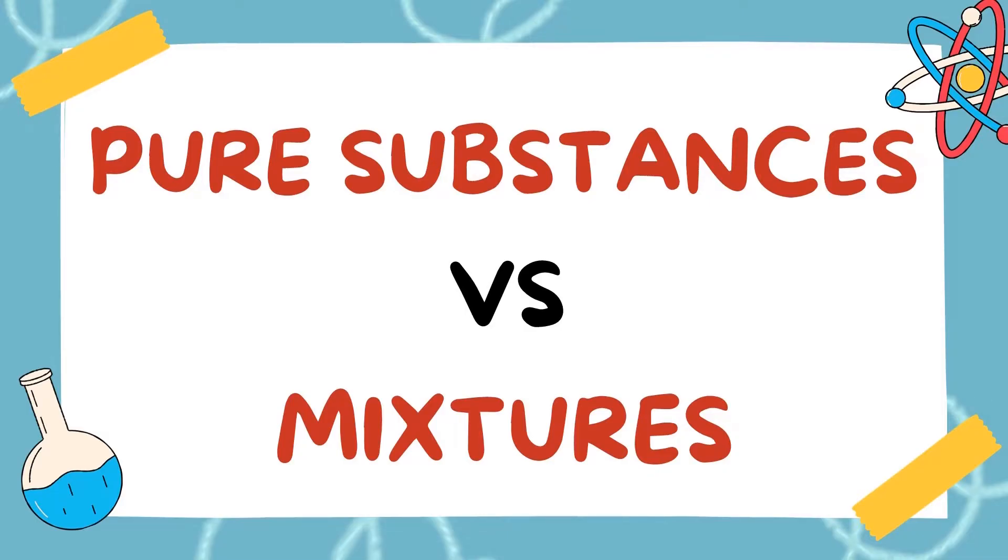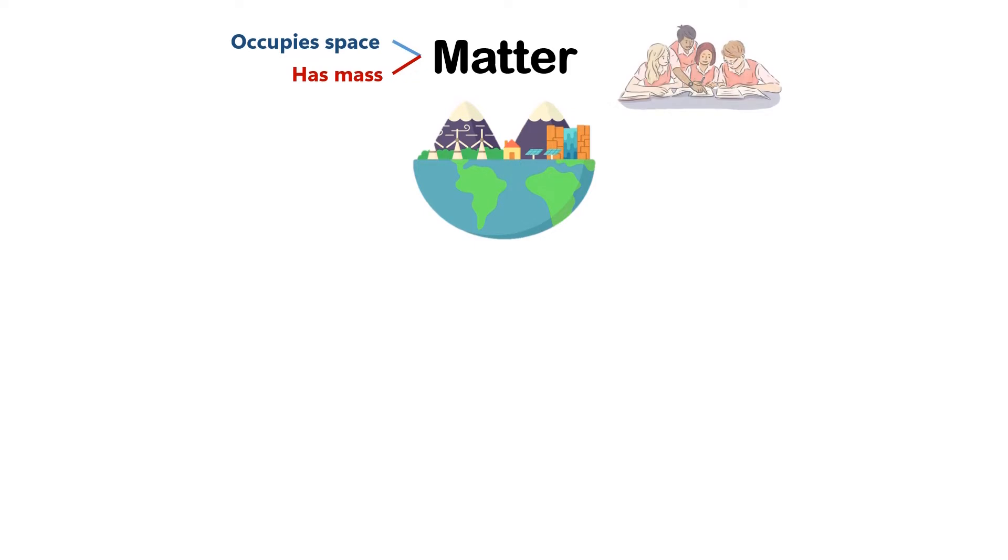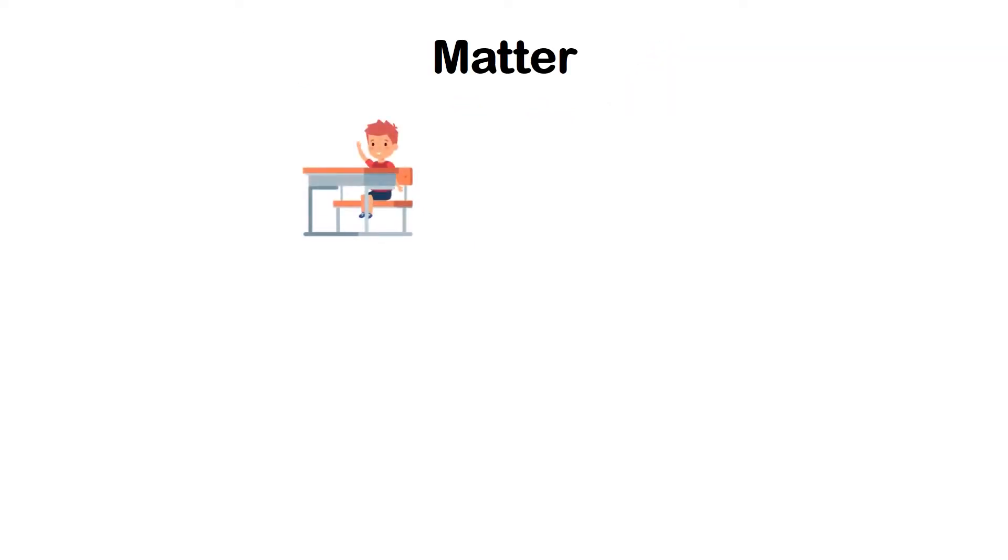Pure Substances Versus Mixtures. Matter is anything that occupies space and has mass. Everything around us is made up of matter, including us humans. The chair that you sit on, the water that you drink, and the air that you are breathing are made up of matter.